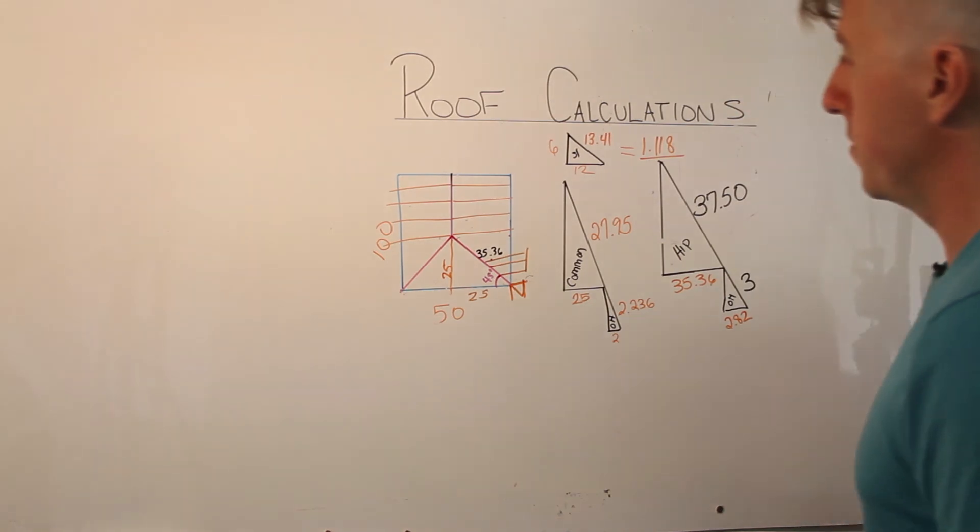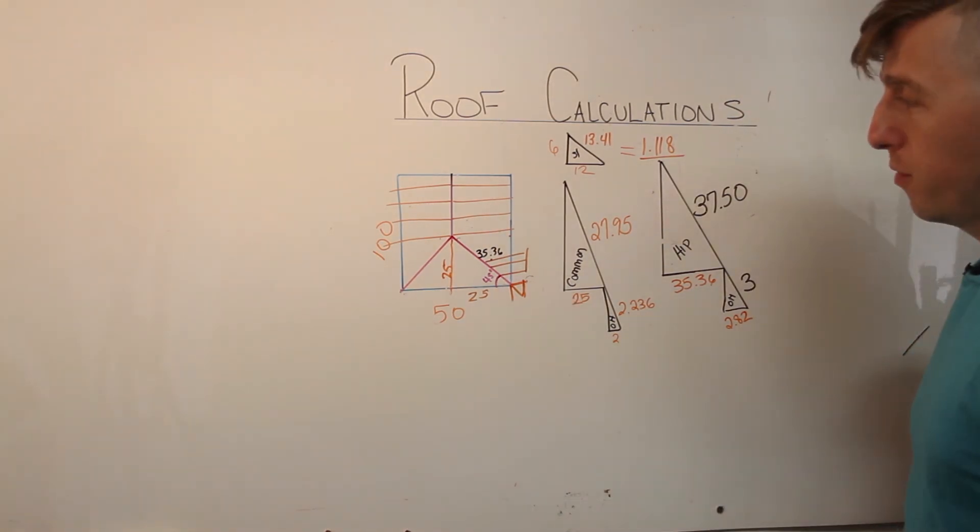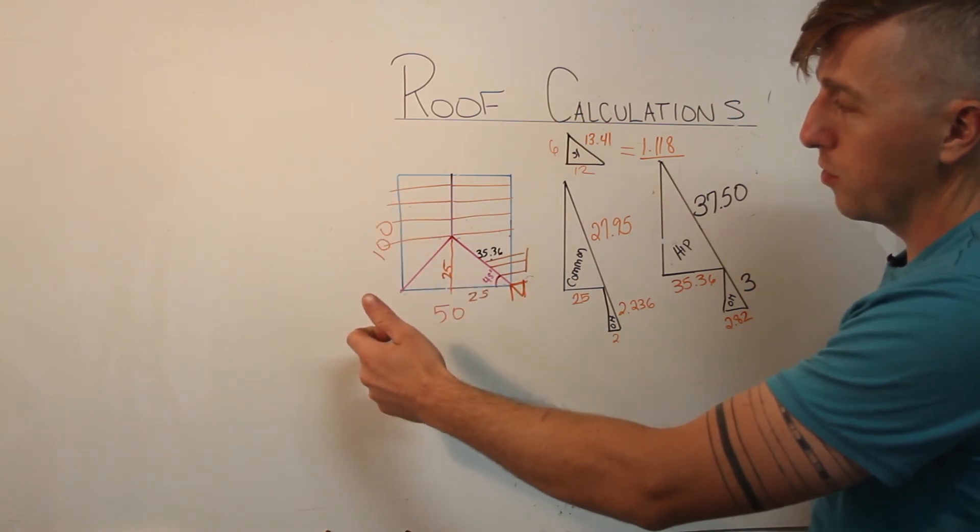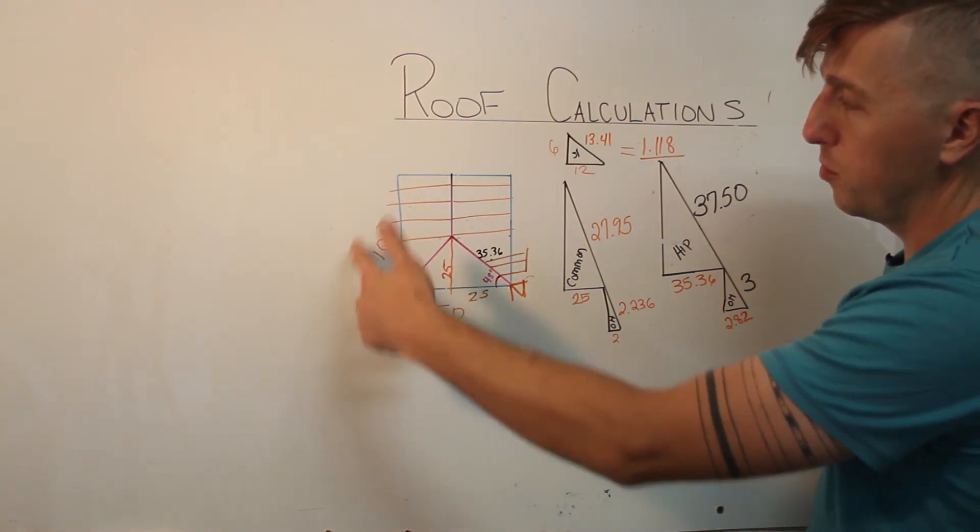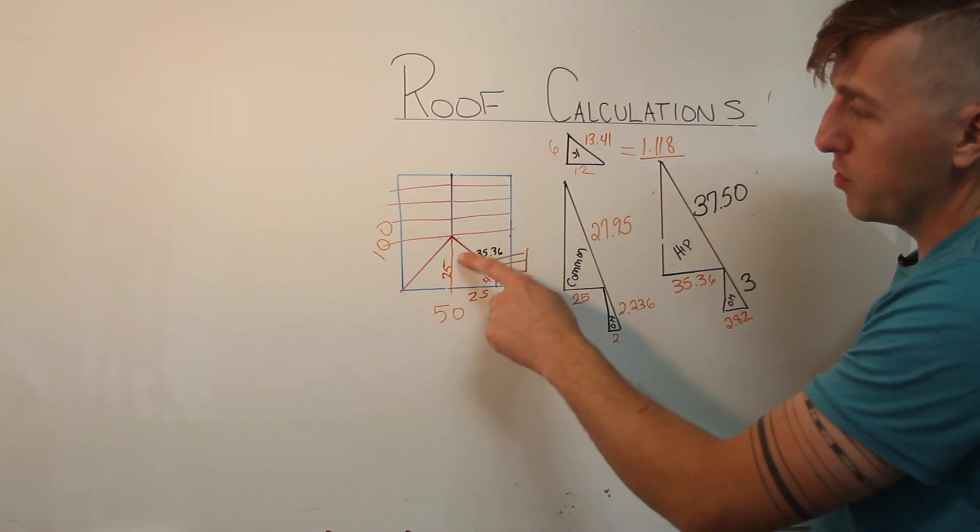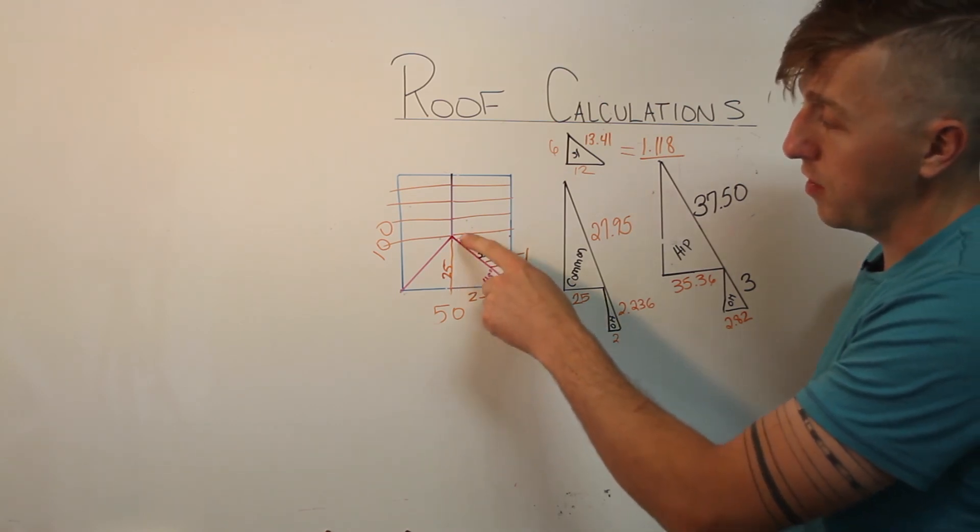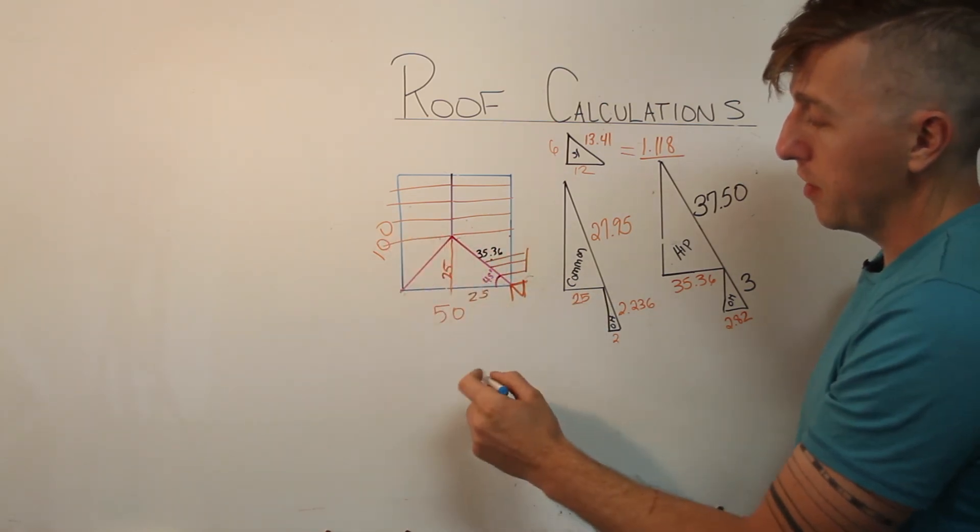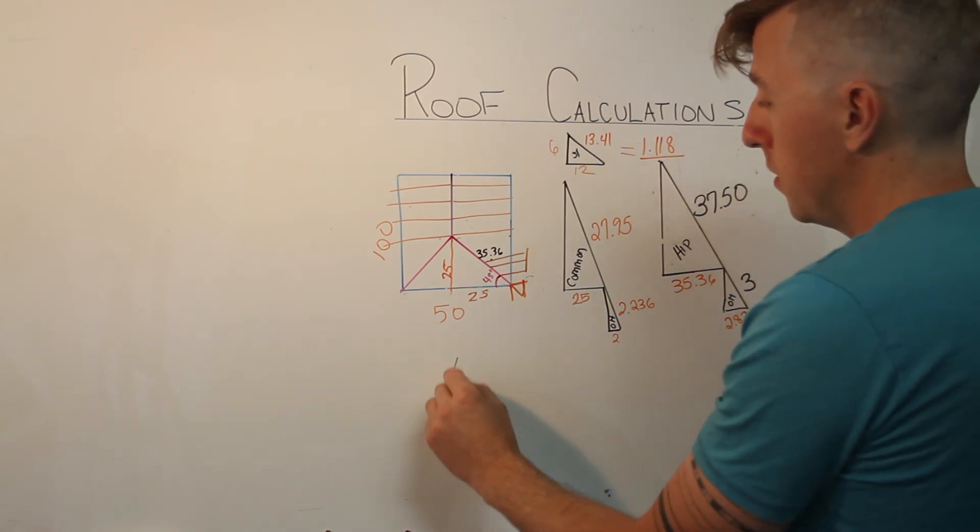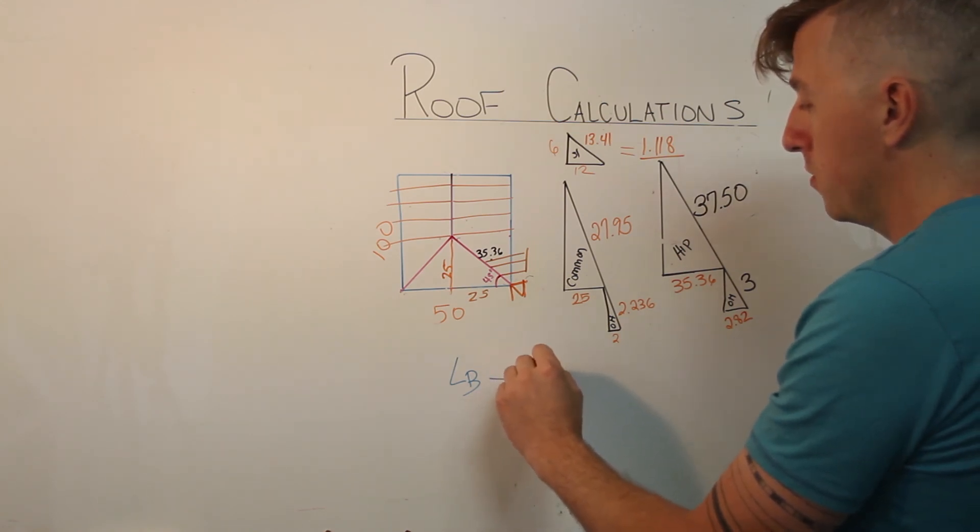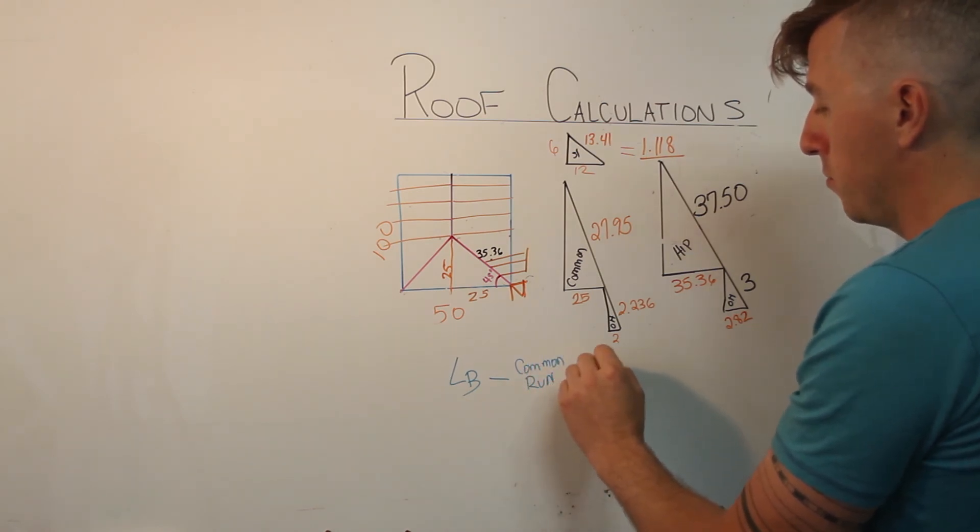The next thing that we'll look at is how to figure out your ridge board length for a hip roof. So previously we were talking about just for a regular gable roof, you would just take the total length of your building, which would be in this case 100 feet. But now because we have a hip that comes back one of the runs of a common rafter, all you do is you take the length of your building, the length of the building, minus the common, the common run, and that equals your ridge length.